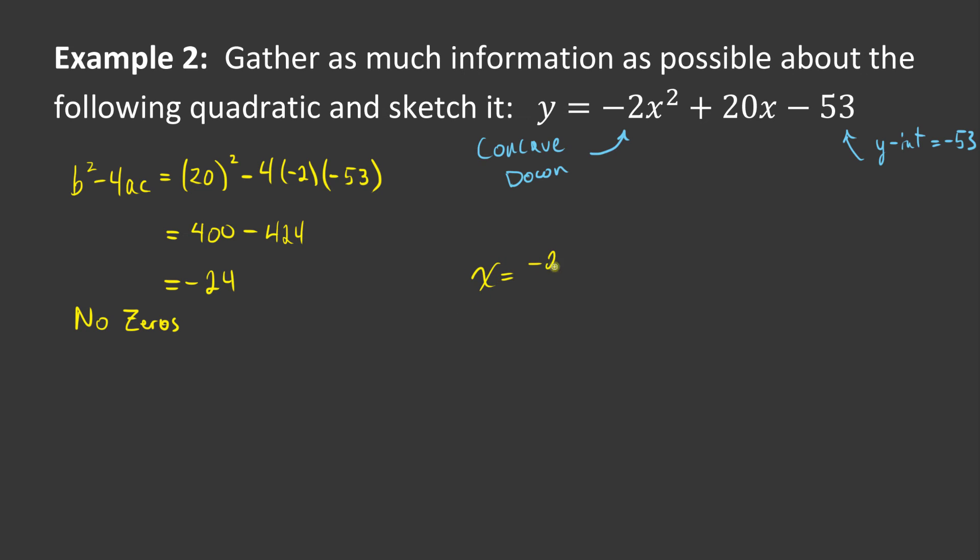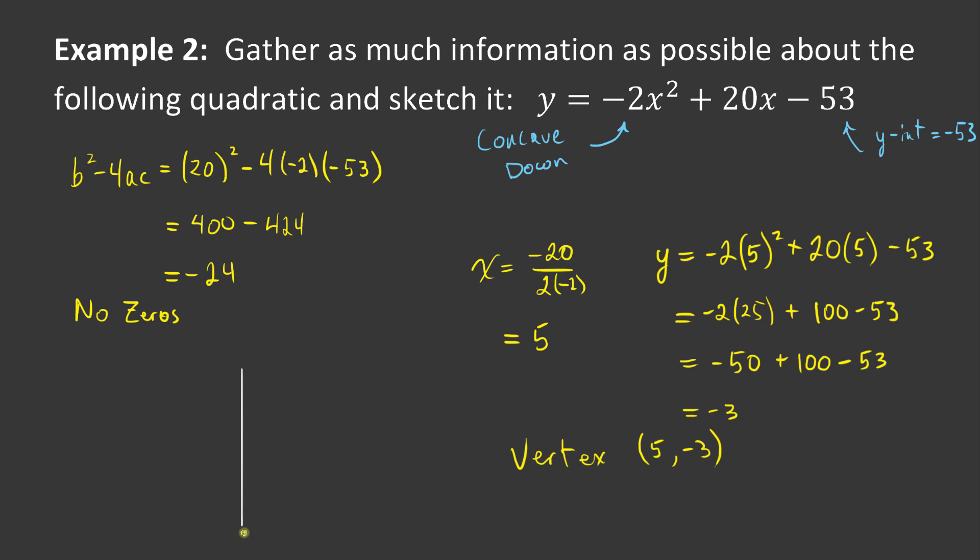Let's get the vertex. My vertex formula, negative b over 2a, gives me -20/(-4) = 5. So I know my x value, and now I'm going to get my y value by plugging it in. -2(25) + 20(5) - 53 = -50 + 100 - 53 = -3. So my vertex is at (5, -3). Assuming I did all that correctly, does that make sense? Sure, it's concave down and I have no zeros.